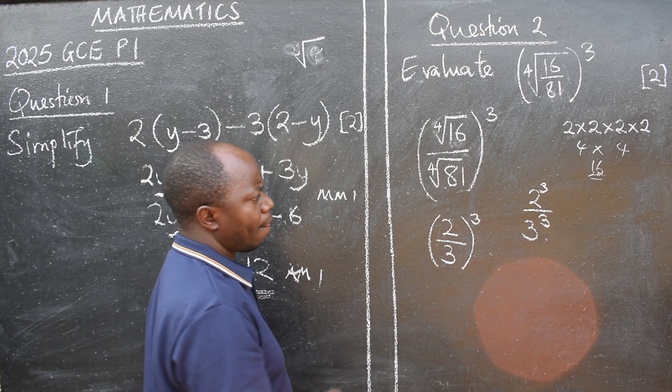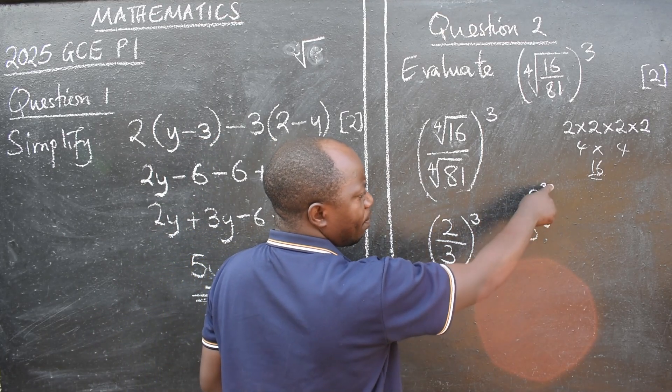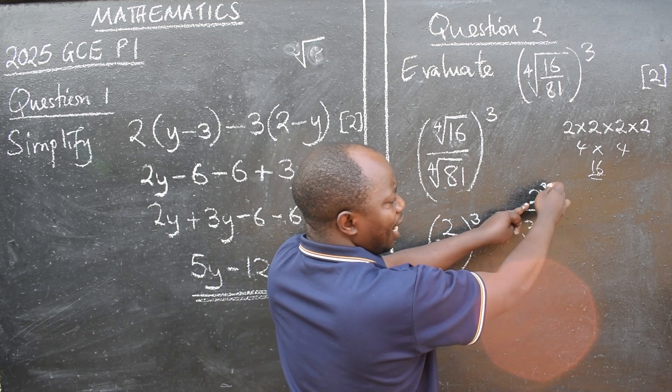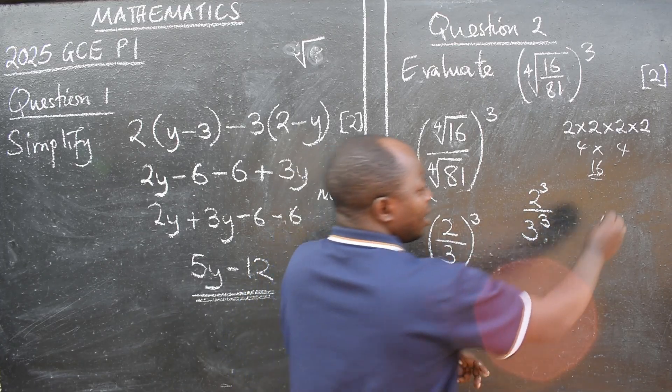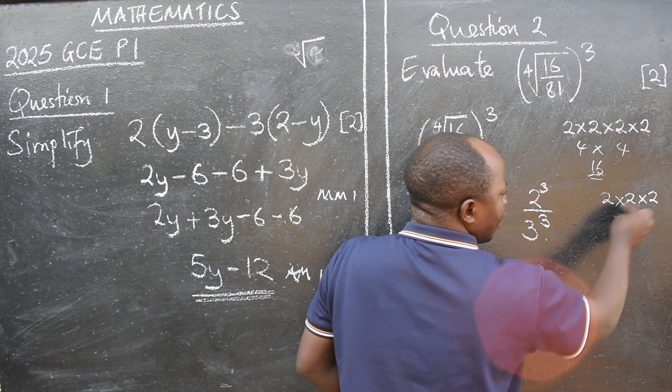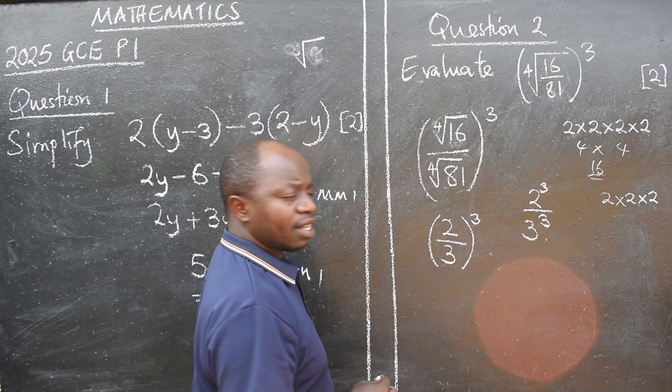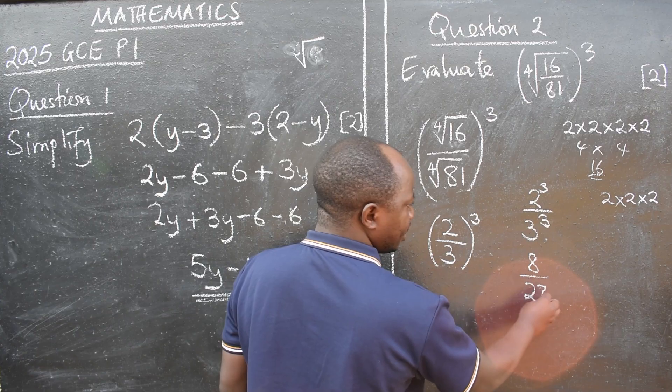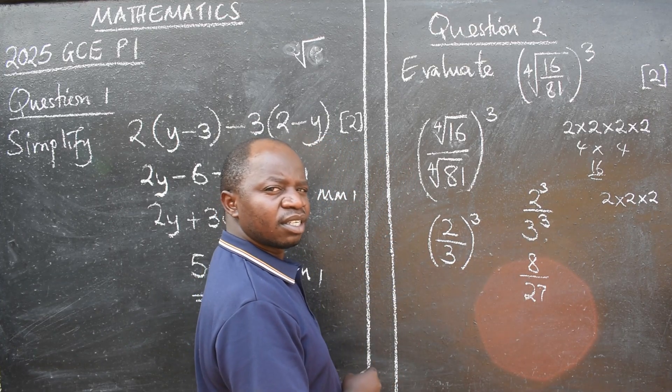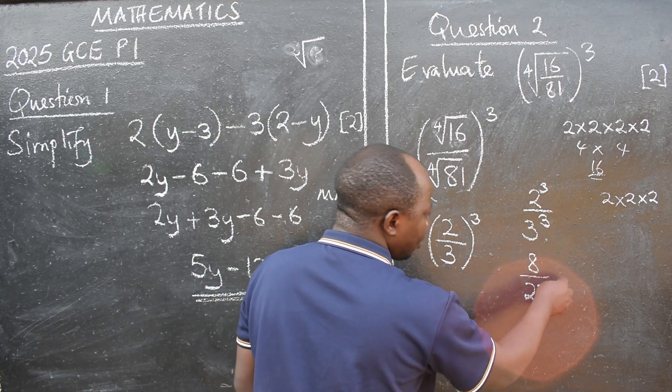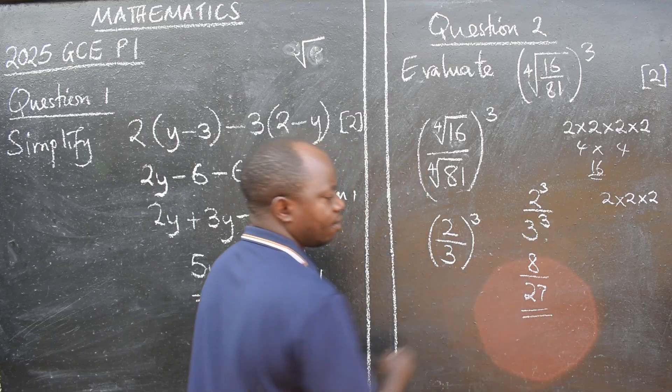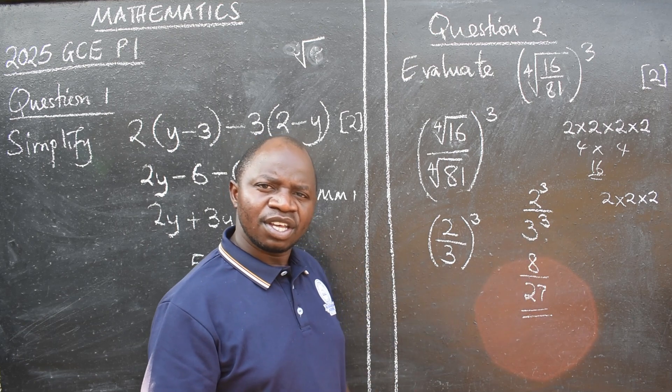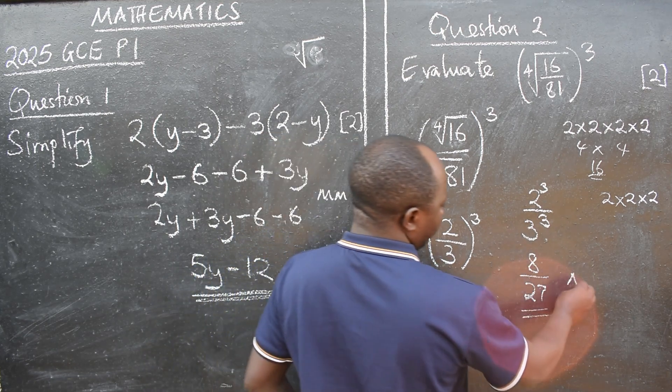Then we are going to say 2 to the power 3. What is the correct answer? 2 should come 3 times. Not 2 times 3 please. Here we are saying 2 times 2 times 2. And this will give us 8. Over. 3 to the power 3 is 27. Are we together? At this stage you have reached. That is to evaluate. Meaning, this is the correct answer.